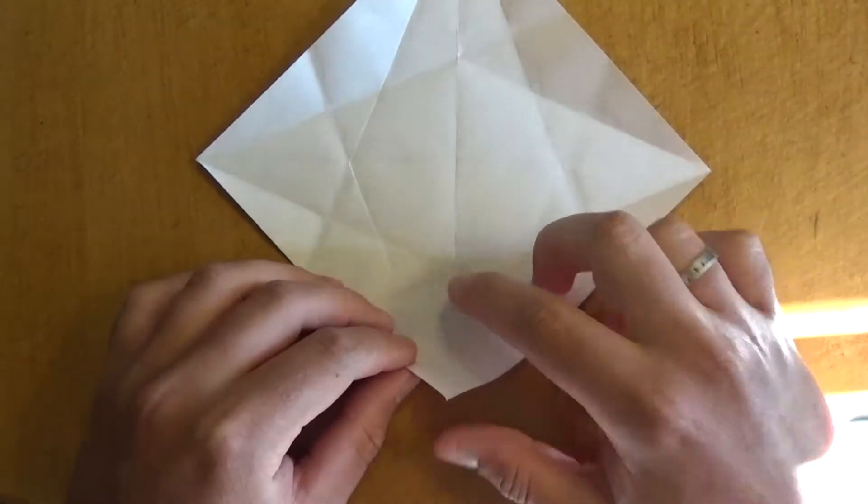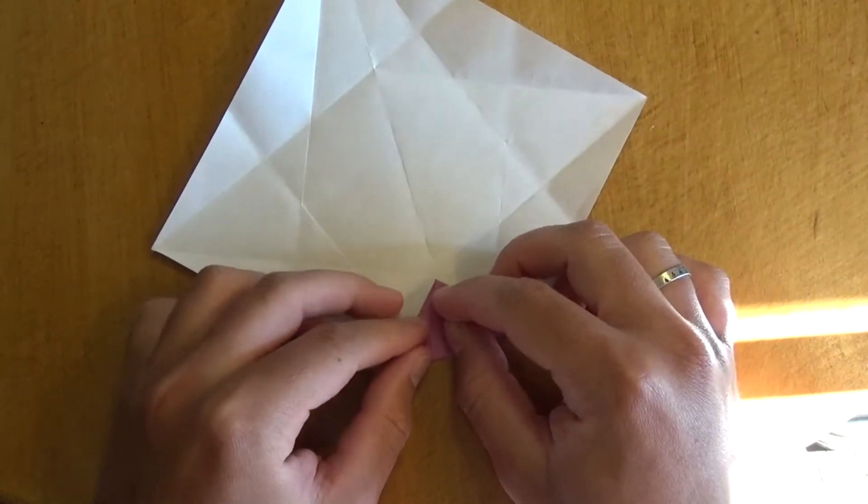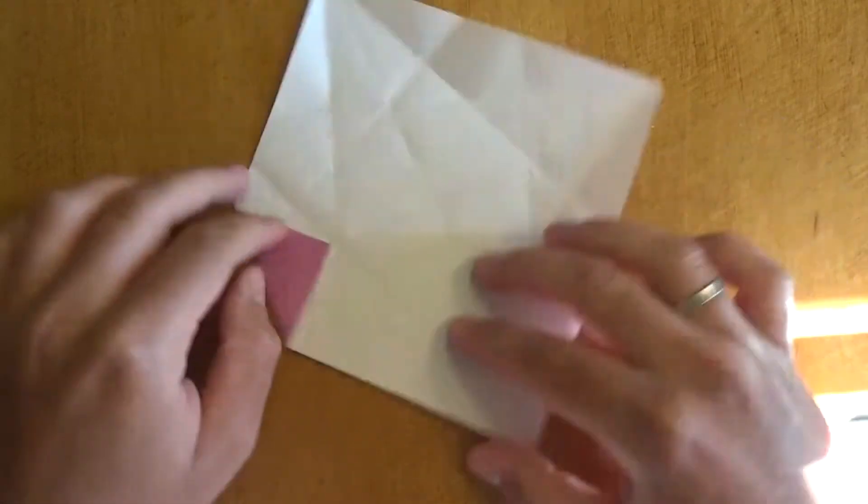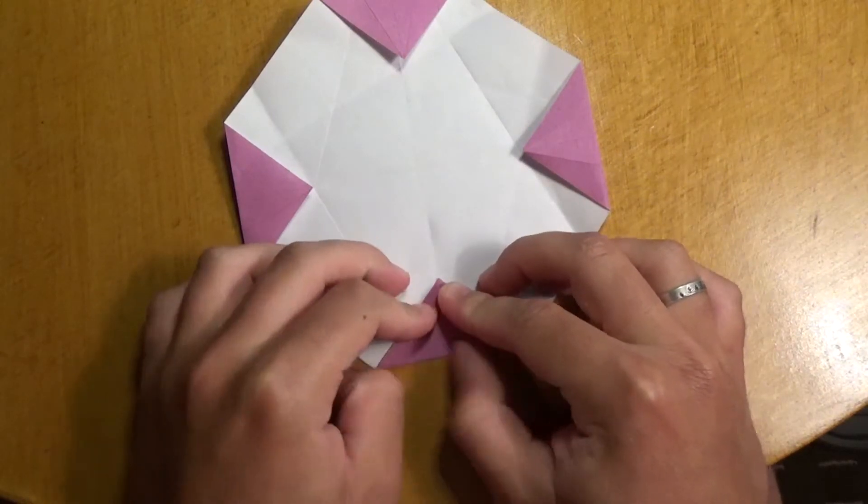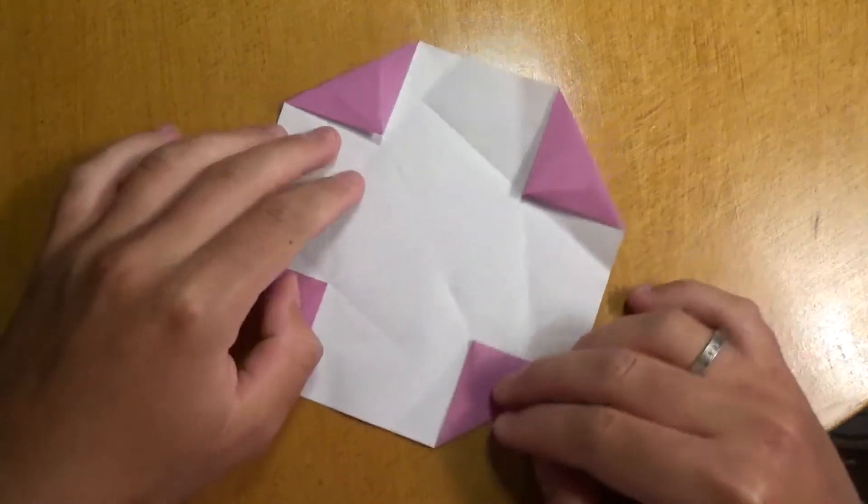Okay, now fold this point to this intersection. Like that, and do that three more times. Okay, just like this, this is what we got.